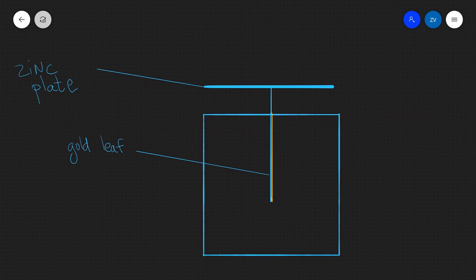What we're going to be talking about today is the gold leaf electroscope experiment to prove the photoelectric effect. Now here is our experimental setup.